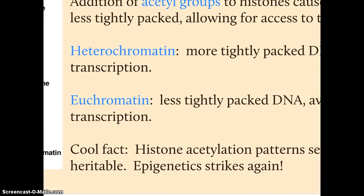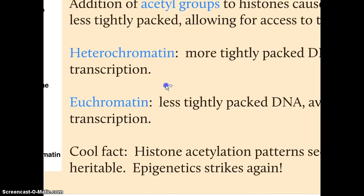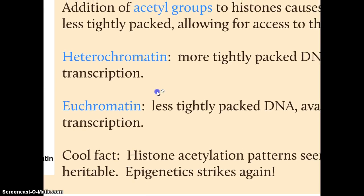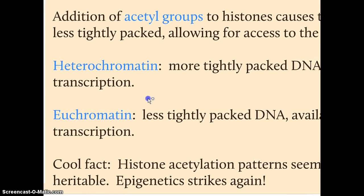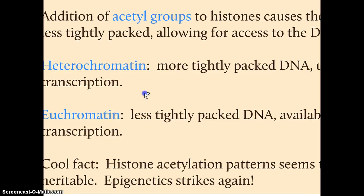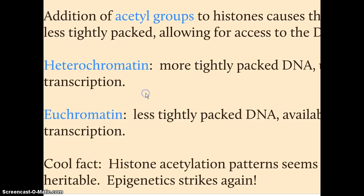These two types of genetic material are called heterochromatin and euchromatin. Heterochromatin — 'hetero' meaning different — is unacetylated and the DNA is tightly packed. Euchromatin has been acetylated, so the DNA is more spaced out. So again, it's about adding these acetyl groups.